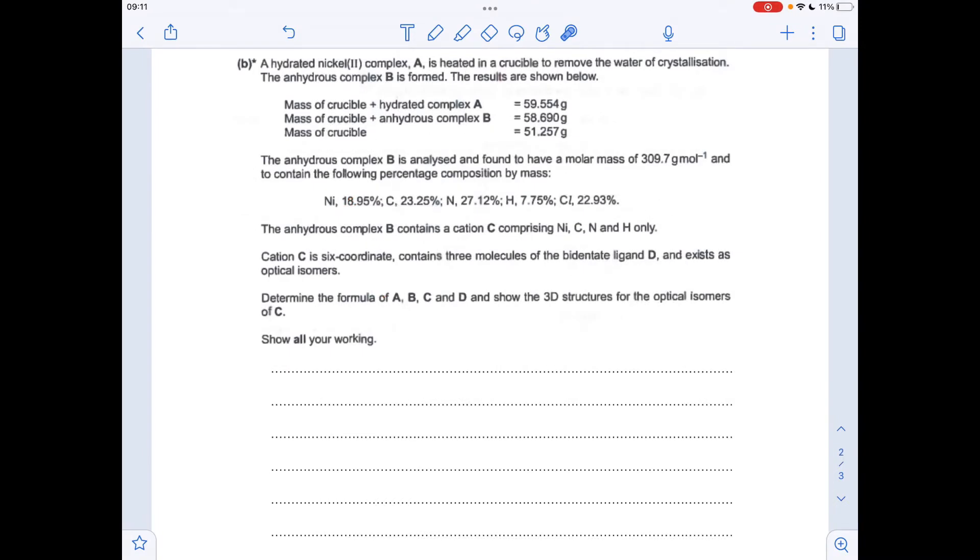Moving on to part B now. The first thing I want to do is work out the empirical formula and then the molecular formula for anhydrous complex B. So the usual thing - the percentages divided by the relative mass, we get the moles, three significant figures for the moles always a good idea, and divide by the smallest, which is this one here. So we get this ratio of atoms.